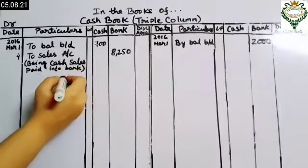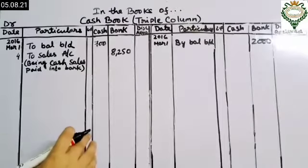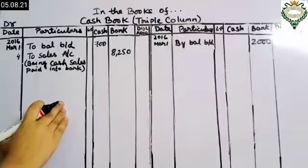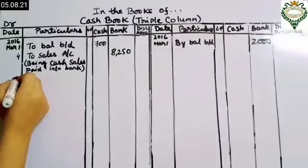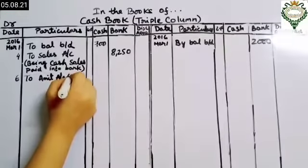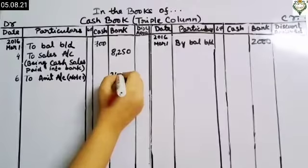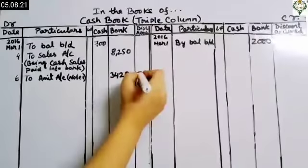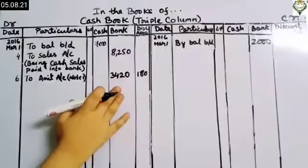Now the transaction on 6th March: sold goods to Amit for ₹4000 with 10% trade discount and 5% cash discount. From the working note we got ₹3420 to record on the debit side. We write 'To Amit Account' with ₹3420 in the bank column since we received it by check, and ₹180 cash discount in the discount column. Trade discount is not recorded.